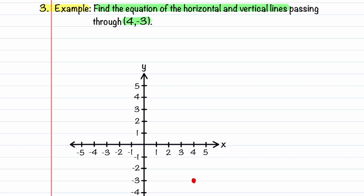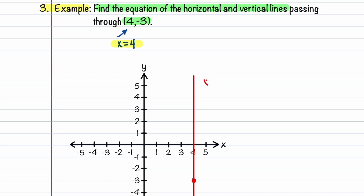Let's draw our vertical line first. Our vertical line through this point looks like that. To find the equation of this line, note that x is equal to 4, and y can take on any value. So that's the equation of our vertical line. Let's mark this as x is equal to 4.